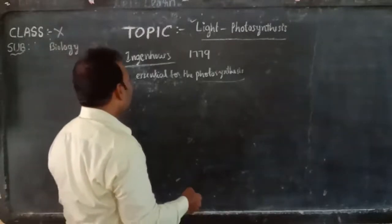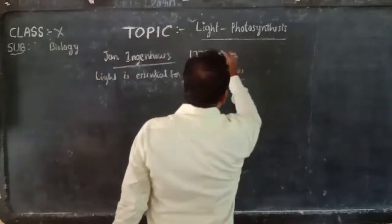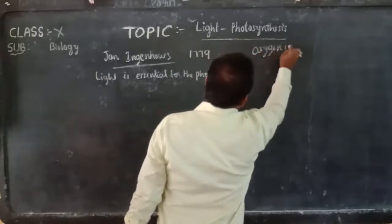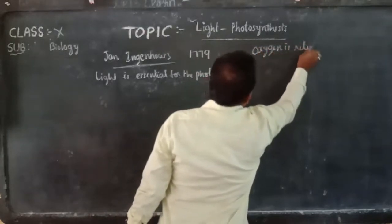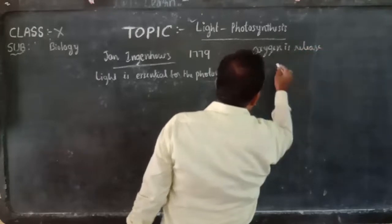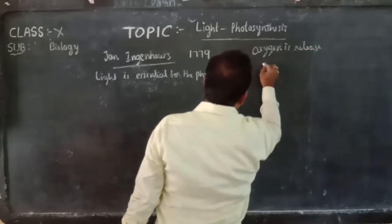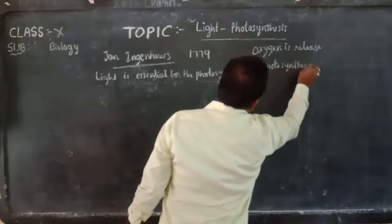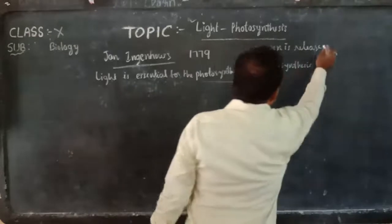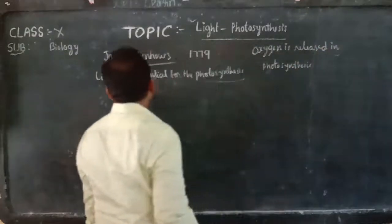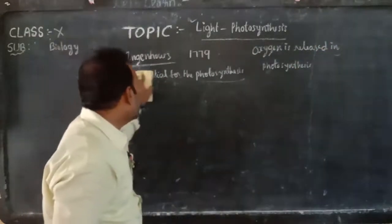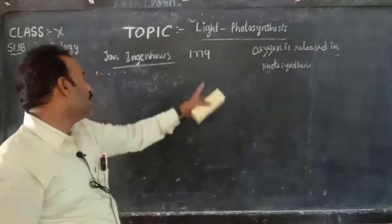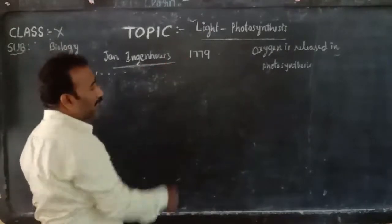John Ingenhaus conducted an experiment and proved that oxygen is released during the process of photosynthesis.